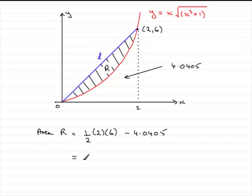Do that sum on your calculator and you should find you get 1.9595. And we've got to give this to three significant figures, so that's going to be 1.96.